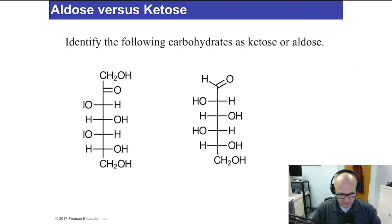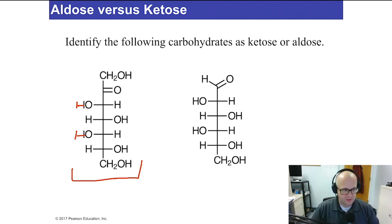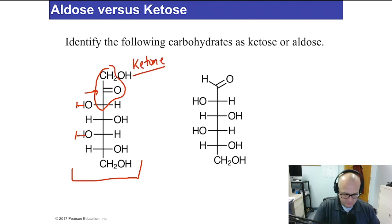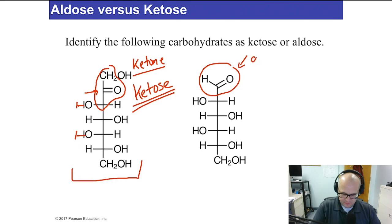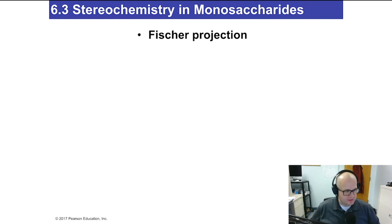Here's an example: are the following carbohydrates ketose or aldose? For this first one, look for the carbonyl — right there — and this is a ketone, so the sugar itself is a ketose — a ketone-containing monosaccharide. This second one is an aldehyde, so it is an aldose — an aldehyde-containing sugar.